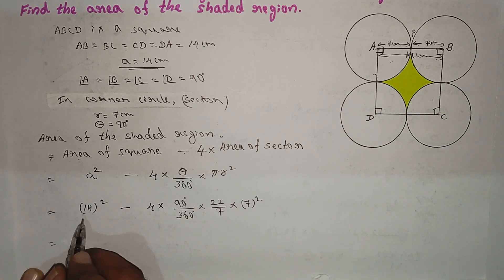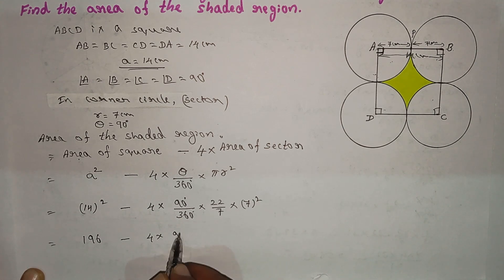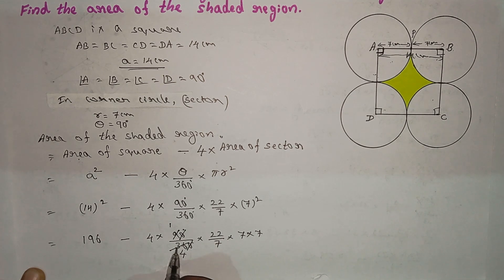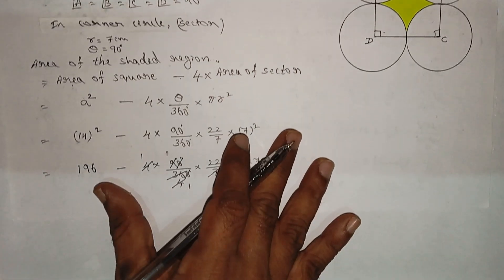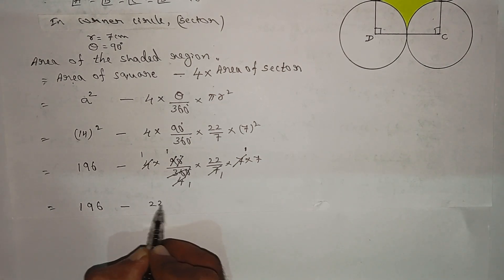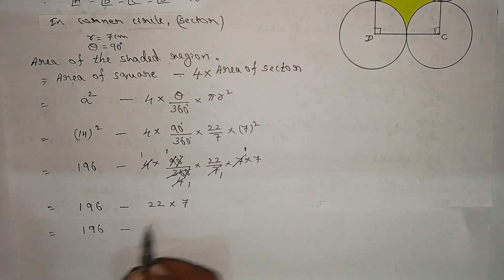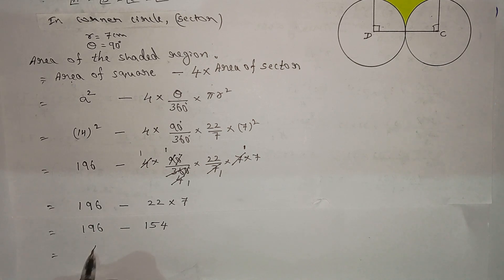14 squared is 196. So the expression becomes 196 minus 4 into 90/360 into 22/7 into 7 squared. Simplifying: 196 minus 22 into 7, denominator 7 cancels, giving 196 minus 154, which equals 42.